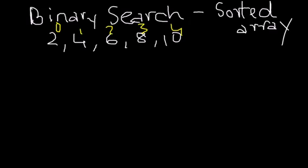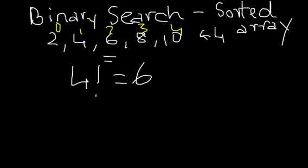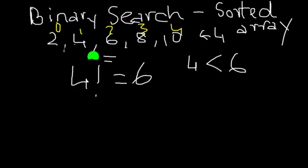Let's say you're searching for 4. The middle element is 6, so it checks whether the element you're searching for is equal to 6. Since 4 is not equal to 6, it checks whether 4 is less than or greater than 6. Since 4 is less than 6, we know 4 appears on the left side of the array, so you can obviously disregard the right-side elements — 4 won't be anywhere there.